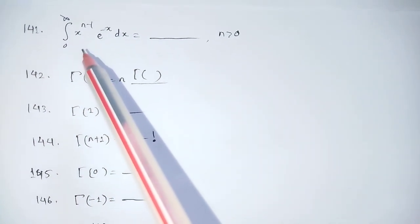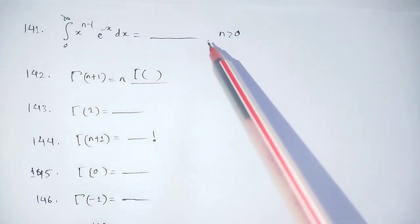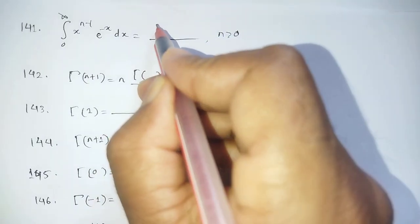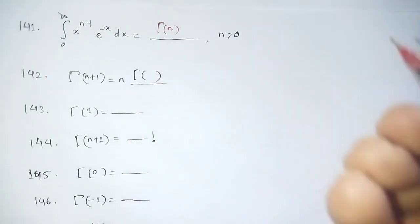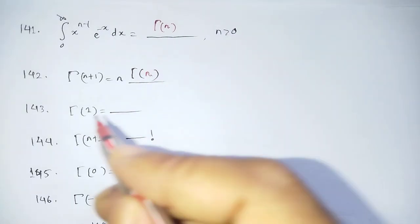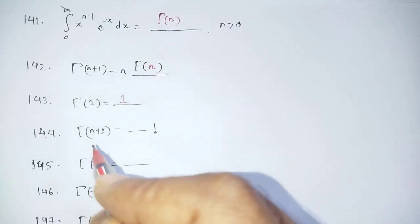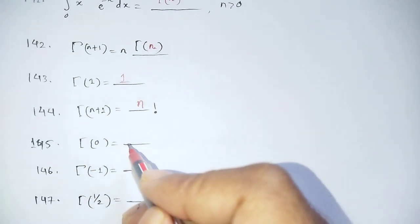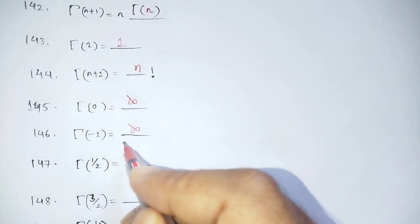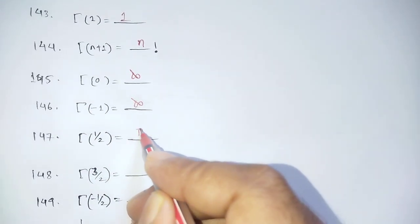Question 141: Integration from 0 to infinity of x^(n-1) · e^(-x) dx equals — this is the definition of the Gamma function. The result is Γ(n). Key properties: Γ(n+1) = n·Γ(n), Γ(1) = 1, Γ(n+1) = n!, Γ(0) = ∞, Γ(-1) = ∞ (negative integers give infinity).